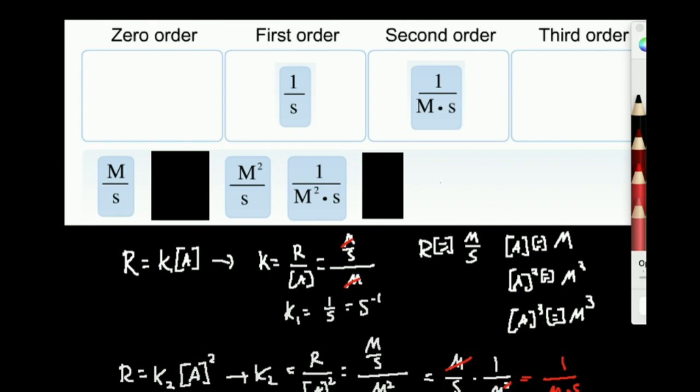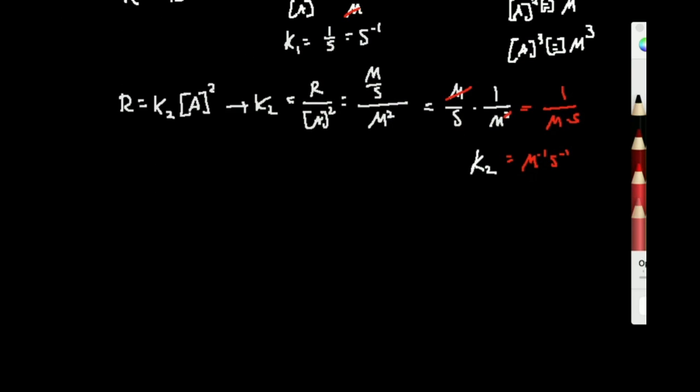Let's go ahead and do third order. Third order reaction. Apply the same thing. Rate for a third order reaction is going to be the third order rate constant times A cubed. Rearrange for K. K3 is going to be rate divided by concentration of A cubed. Simple enough, right? So K3, plug in units, rate is going to be molar per second divided by A cubed which has units of molar cubed.